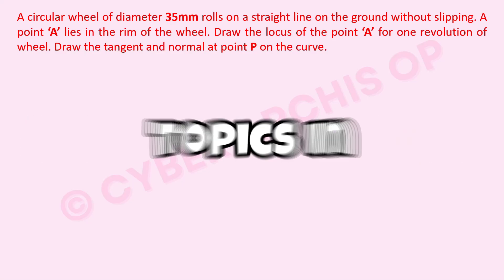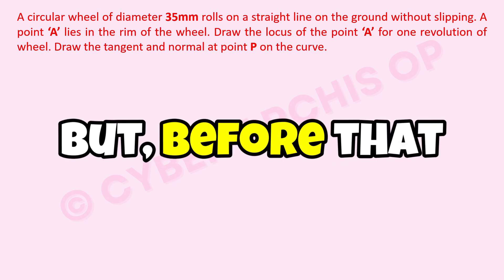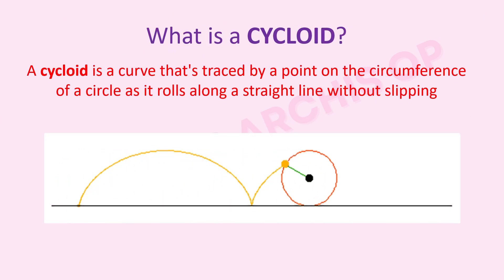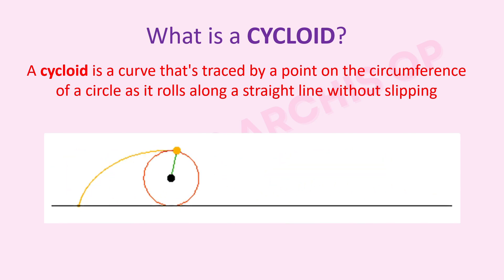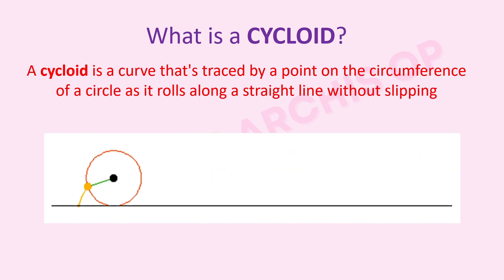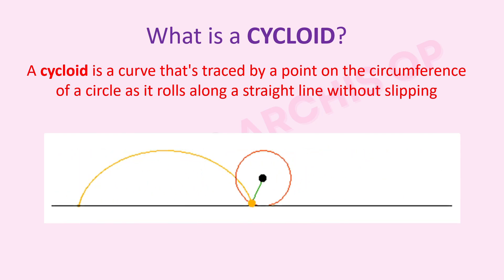Cycloid is one of the most important topics in engineering drawing. A cycloid is a curve traced by a point on the circumference of a circle as it rolls along a straight line without slipping. If we mark a point P on the circumference of the circle, the curve traced by one complete revolution of the wheel is known as a cycloid.